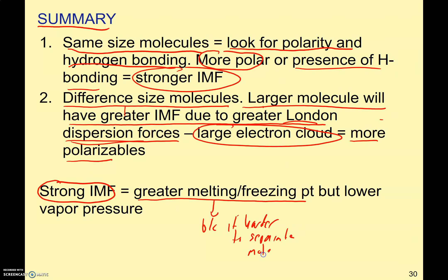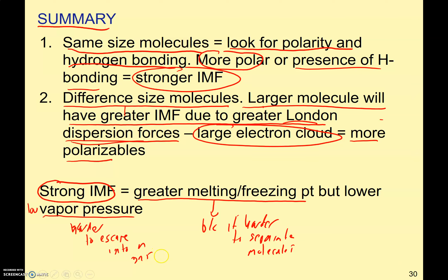It's harder to separate the molecules. But if you have a strong intermolecular force, you have a lower vapor pressure — not higher, lower — because it's harder for molecules to escape into a gas. So to summarize: if you have strong intermolecular forces, the substance would have a greater freezing point and melting point because it's harder to separate the molecules, but it would have a lower vapor pressure because it's harder for the molecules to escape into a gas.